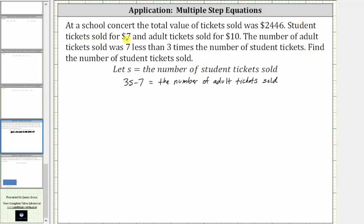Each student ticket sold for $7, and therefore the value of the student tickets is equal to $7 times S, or the expression 7S. Plus, the value of the adult tickets would be $10 times the number of adult tickets sold, which is equal to the expression 3S minus seven. Therefore, the value of the adult tickets is 10 times the quantity 3S minus seven.